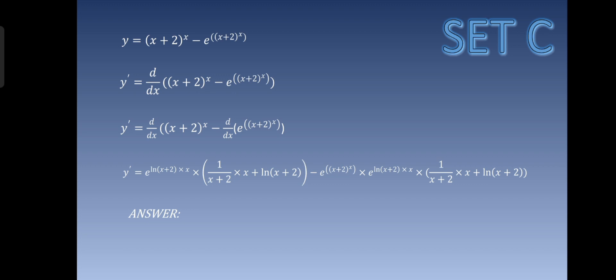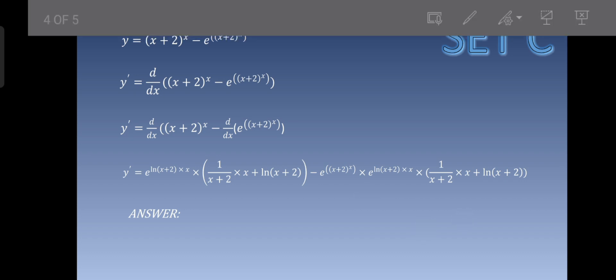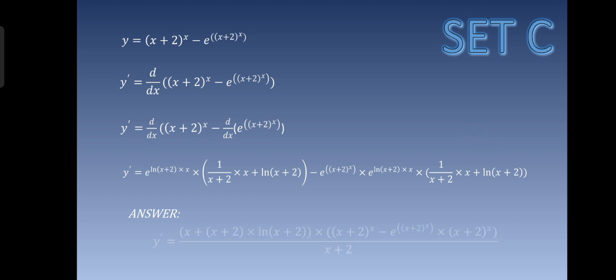Simplifying that, the answer is x plus 2 raised to x times ln(x plus 2) times x plus 2 raised to x, minus e raised to x plus 2 raised to x, times x plus 2 raised to x, all over x plus 2. We are done with Set C.